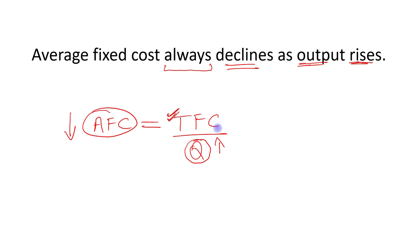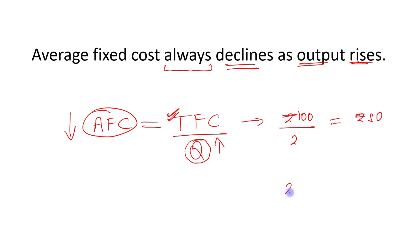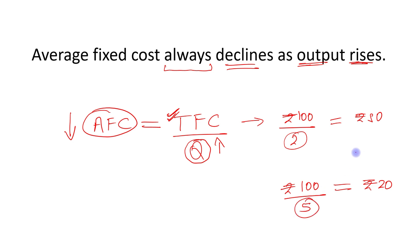For example, if total fixed cost is rupees 100 and the quantity of output produced is 2 units, then average fixed cost will be rupees 50. But if total fixed cost stays the same and output level increases from 2 units to 5 units, the average fixed cost becomes rupees 20. So when output level increases from 2 to 5, average fixed cost declines from rupees 50 to rupees 20.